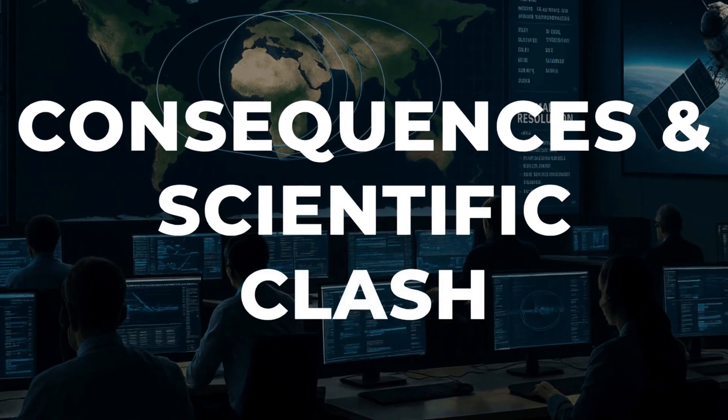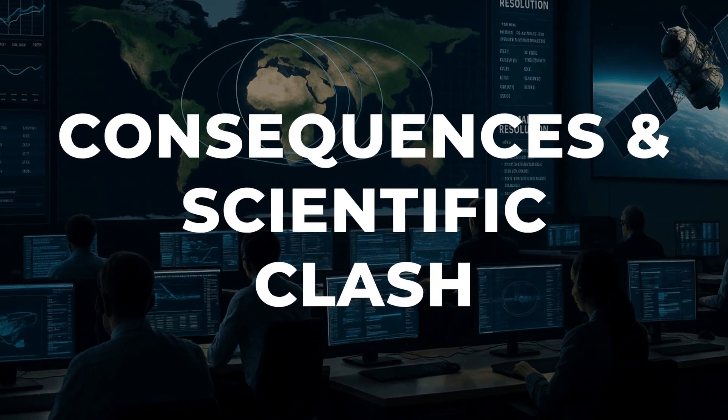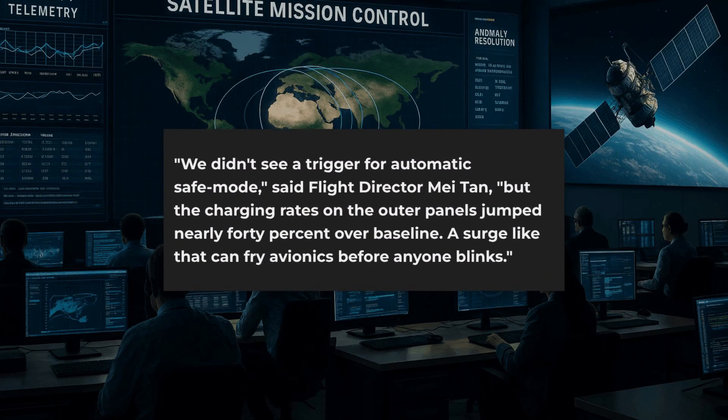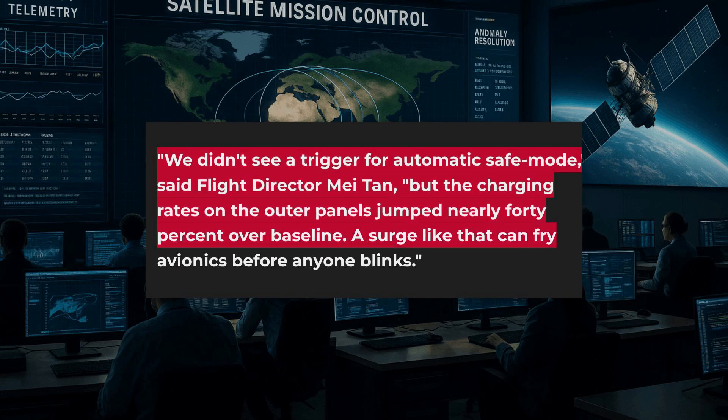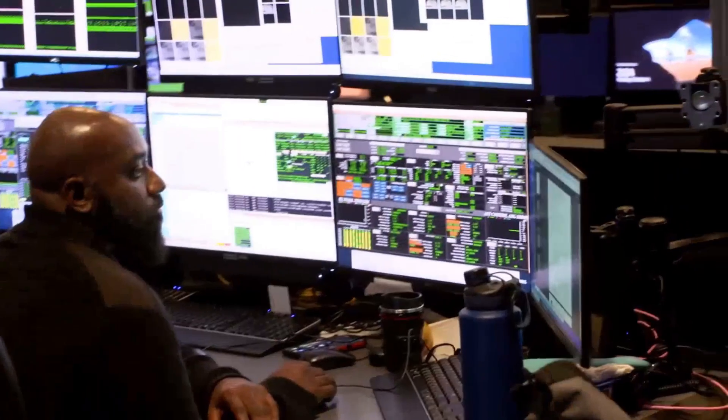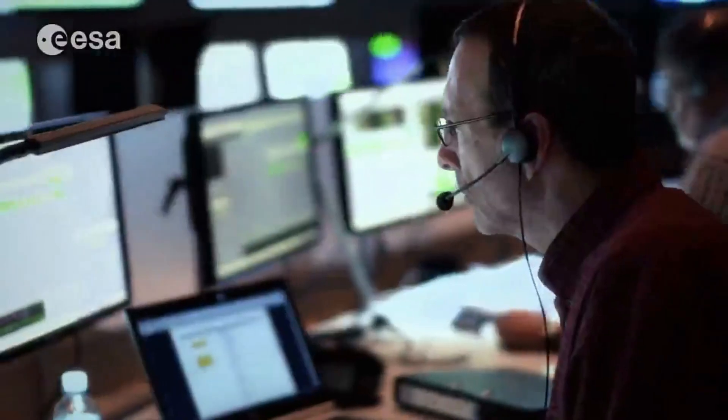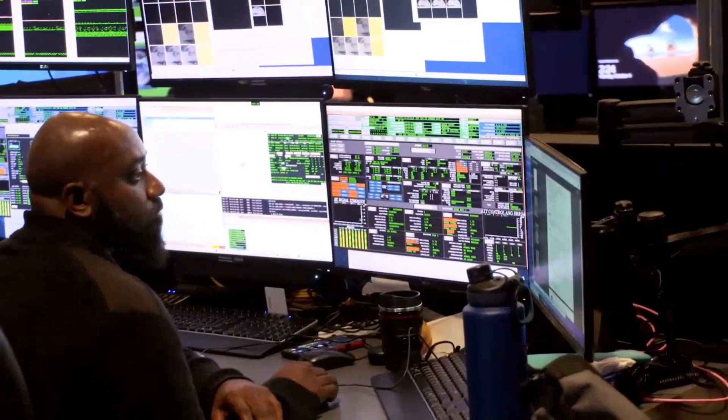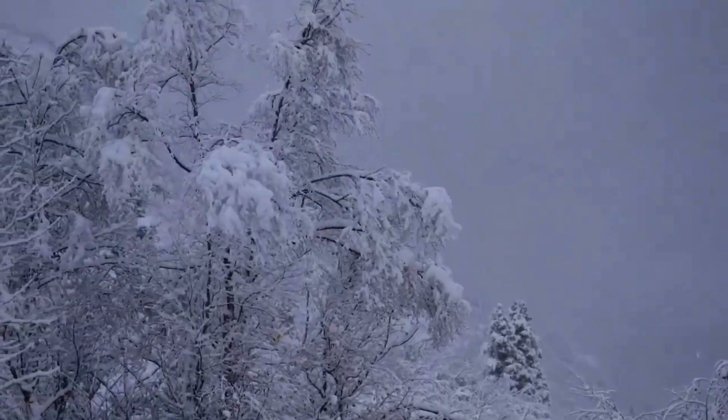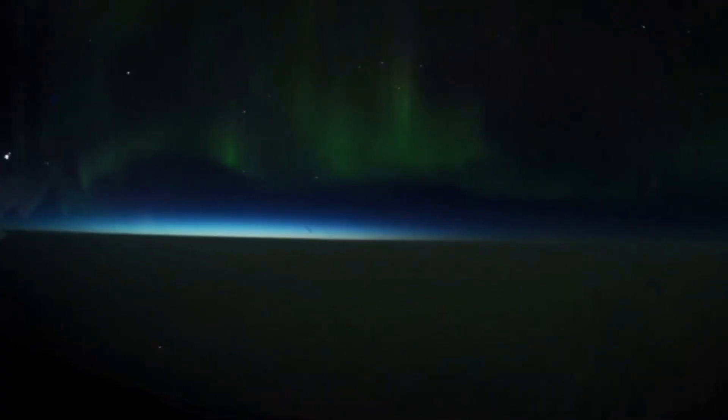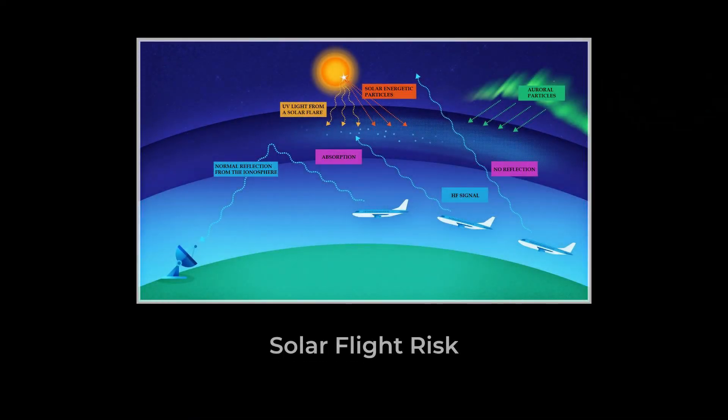Satellite operators across the globe spent the hours after the coronal mass ejection alert in a state of heightened vigilance. As the first electron spikes registered at monitoring stations, commercial networks initiated precautionary protocols. A senior instrument scientist at a major European geosynchronous satellite consortium recalls the moment: "We didn't see a trigger for automatic safe mode, but the charging rates on the outer panels shot up by nearly 40% over baseline. Our team watched the telemetry like hawks." In low Earth orbit, a weather satellite reported brief but measurable surface charging. High-frequency radio operators, especially those supporting transpolar flights, logged several minutes of degraded signal quality. One northbound flight over the Arctic reported a short-lived HF blackout.